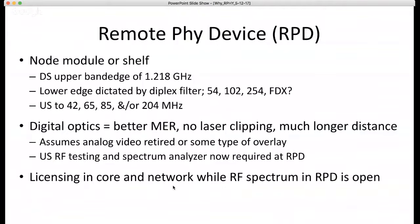From Cisco's side, we do licensing on the CMTS core only — a Remote PHY node, even though it's putting out the RF, has no licensing on that device. That keeps the device cheap and easy to implement and deploy. There's no double-charging for licensing like having a license on the chassis and a license on the RPD. This is all open RPD — it could be a CMTS core from Cisco and an ARRIS node with a Remote PHY device.